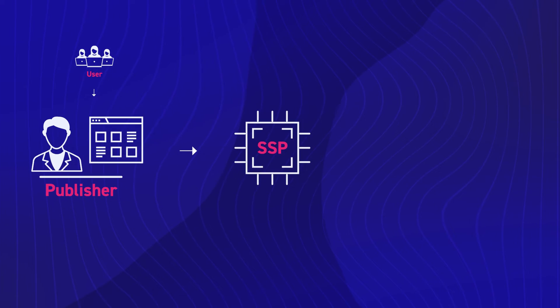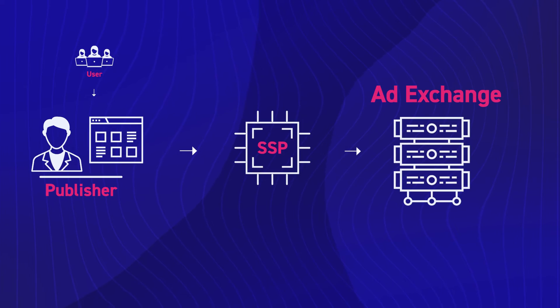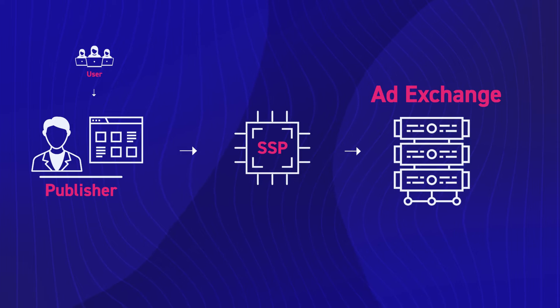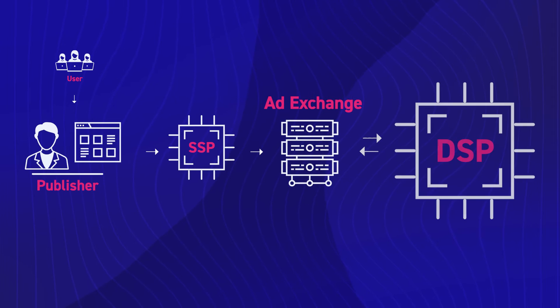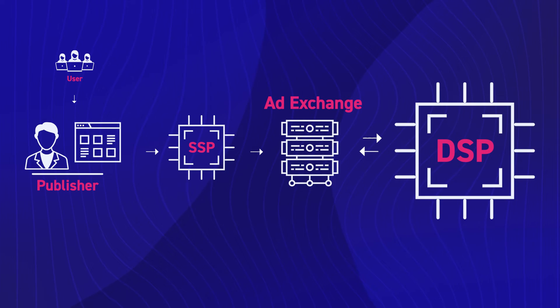The SSP sends the ad impression onto the ad exchange, which is a digital marketplace that connects platforms and agents looking to buy and sell ad inventory. The ad exchange offers the impression to a demand-side platform, or DSP.